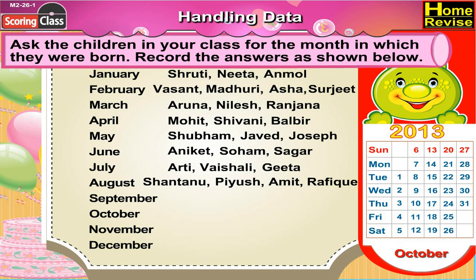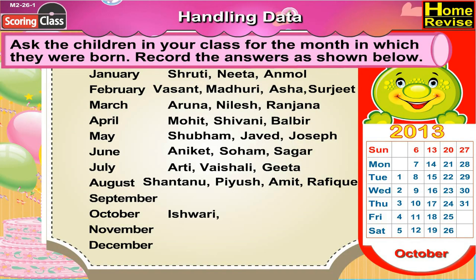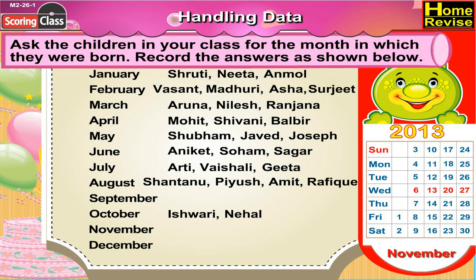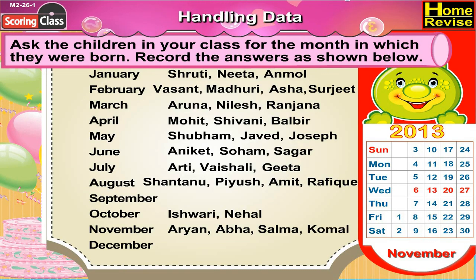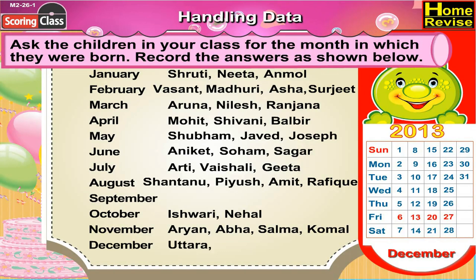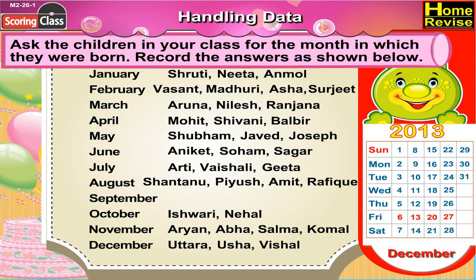In October, Ishwari and Nehal have their birthdays. In November, Arin, Abha, Salma and Komal have their birthdays. In December, Utra, Usha and Vishal have their birthdays in December.